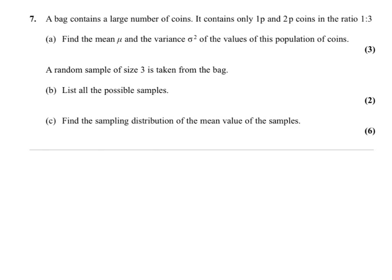A bag contains a large number of coins. It contains only one pence and two pence coins in the ratio one to three. Find the mean and variance of the values of this population of coins.